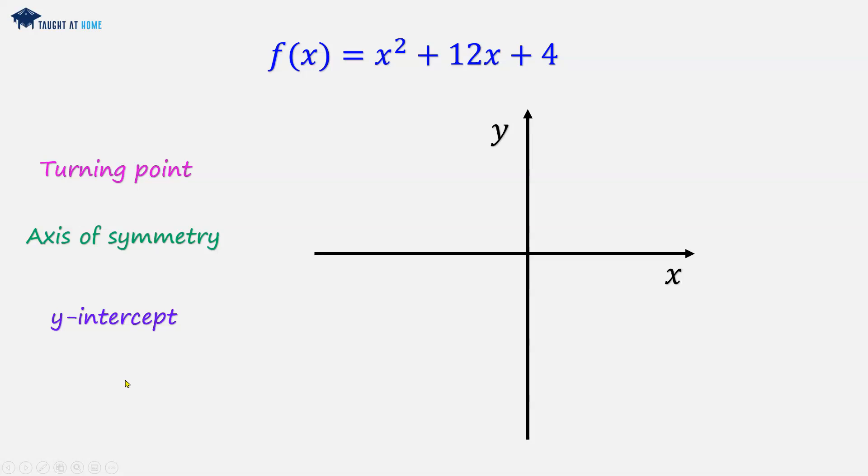The y-intercept we can get straight from this equation because the c value is plus 4. So the y-intercept is going to be 4. Now we use completing the square to find turning point and axis of symmetry.